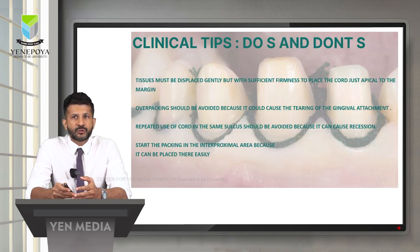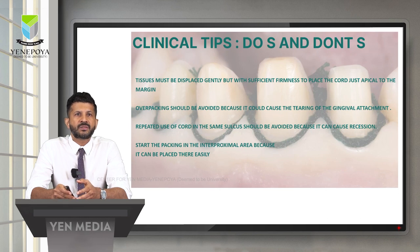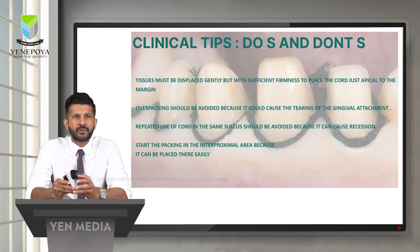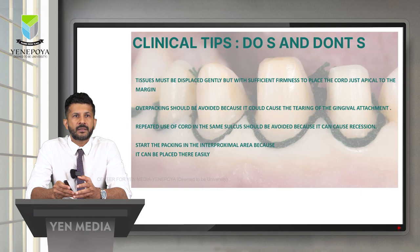As there are potential challenges associated with retraction, here are some clinical tips. The tissues must be displaced gently but with sufficient firmness to place the cord apical to the margins. Overpacking should be avoided because it could cause tearing of the gingival attachment. Repeated use of the cord in the same sulcus should be avoided because it can cause recession. Start packing in the interproximal area because the cord can be placed there most easily.